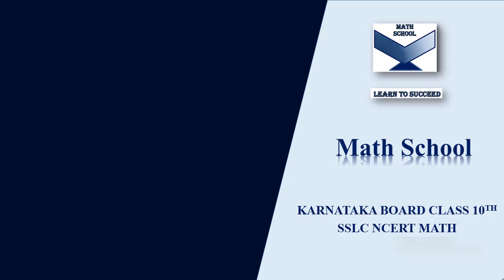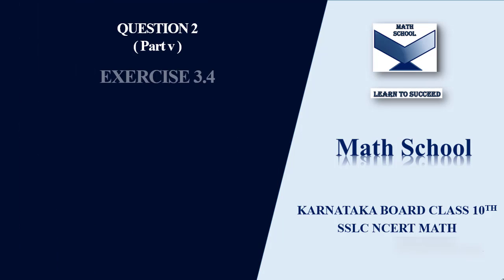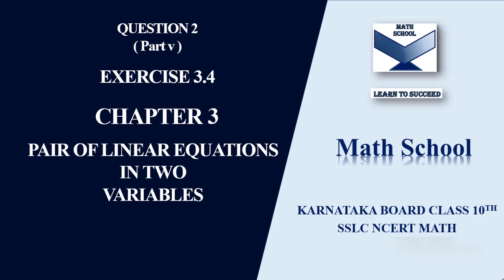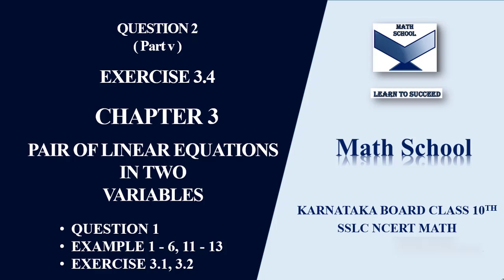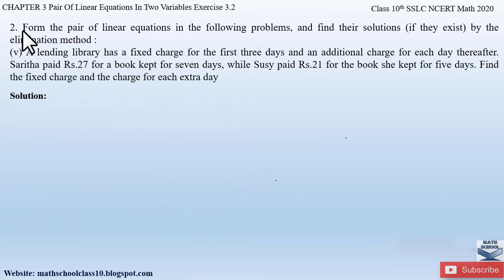Welcome back to my channel Math School. In today's video, let us solve question number 2, part 5 from exercise 3.4, chapter 3: Pair of Linear Equations in Two Variables. In my previous videos I completed question 1 from the same exercise, examples 1 to 6 and 11 to 13, and questions from exercises 3.1 and 3.2. If you have not watched those videos, find the link in the description box below or click the 'i' button above.